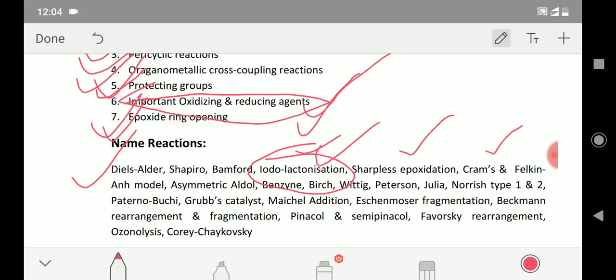In photochemistry, Norrish type 1, type 2, and Paterno-Buchi - these are very important. Also you can look into the di-pi-methane. Then Grubbs catalyst, this is again a very vital topic. Michael additions, Eschenmoser fragmentation is very hot topic for the CSIR NET exam. Questions come from there.